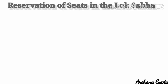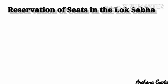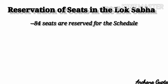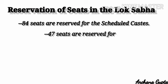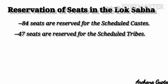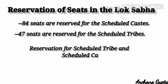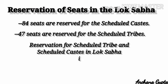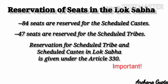Some constituencies are reserved for candidates from Scheduled Castes and Scheduled Tribes. For Scheduled Castes, 84 seats are reserved, and for Scheduled Tribes, 47 seats are reserved in the Lok Sabha. The reservation for SC and ST in the Lok Sabha is provided under Article 330 of the Constitution.